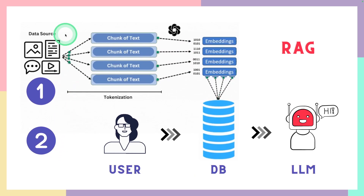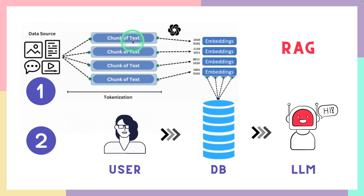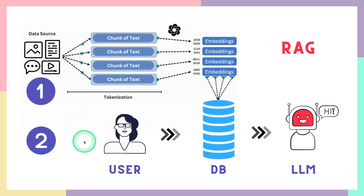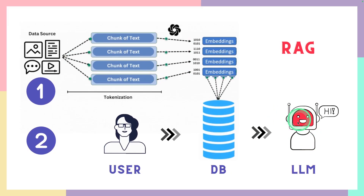In simple terms, the first step in a RAG application is to ingest the data. For example, a PDF or a text file is ingested, then it's divided into chunks. Those chunks are converted to embeddings and stored in the database. When the user asks a question, relevant information is retrieved from the database and sent as context to the large language model, which then generates the response.